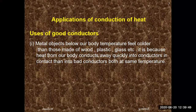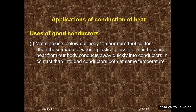Uses of good conductors: metal objects below our body temperature feel colder than those made of plastic or glass. It is because heat from our body conducts away quickly into the conductors. When we make contact with two objects — one wood and one metal — the metal feels colder because metals are conductors and they start transferring heat from your body to the metal. In case of bad conductors like wood, heat transfer does not take place, so you feel the temperature difference.